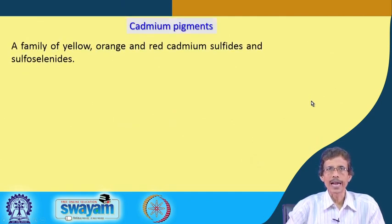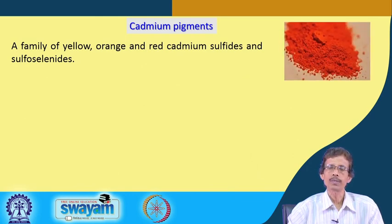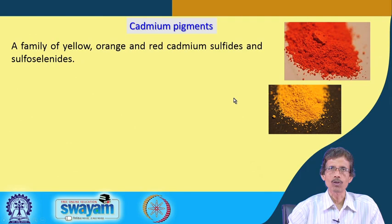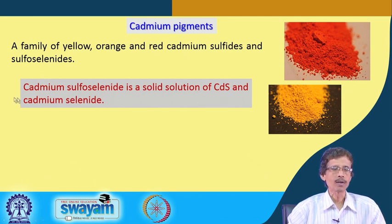Cadmium pigments are very useful, producing colors from yellow to red. They are either sulfides or sulfoselenides — not just cadmium sulfide, but also cadmium selenide imparts useful colors. Cadmium sulfoselenide is a solid solution of cadmium sulfide and cadmium selenide, which is why it is known as the sulfoselenide compound.